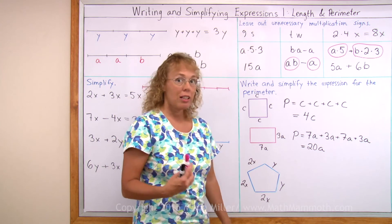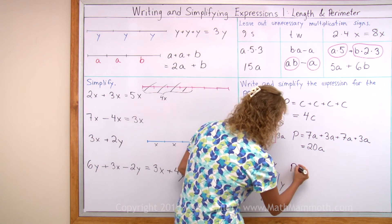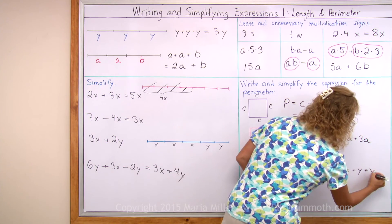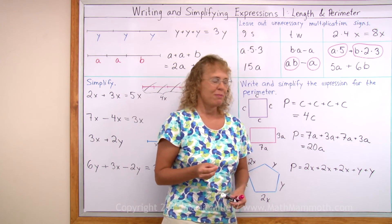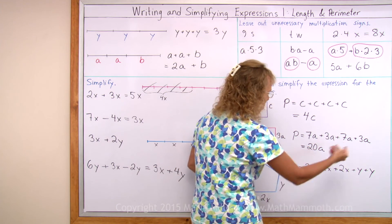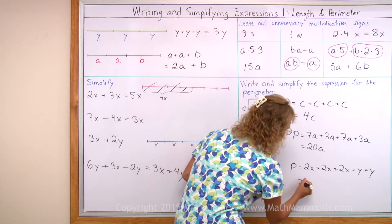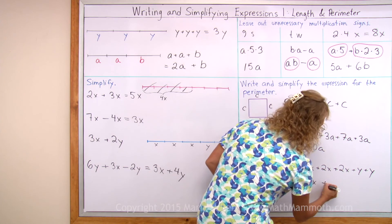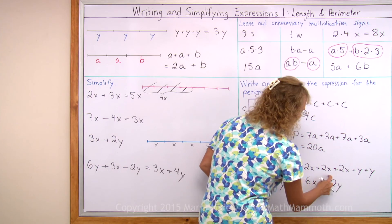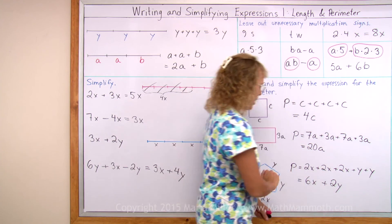The last one is a pentagon — not a regular pentagon because some of its side lengths are different. We go all the way around and add: 2x and 2x and 2x and y and y. Now we can simplify. We can add the 2x terms — it's like 2 apples, 2 apples, 2 apples, which gives 6 apples, so 6x. Then we add the y terms: y plus y gives 2y. Now we have two terms: 6x plus 2y. They are not similar, so we cannot add them together and cannot simplify any further. We're all done with this lesson.